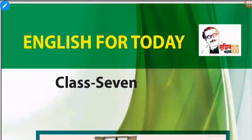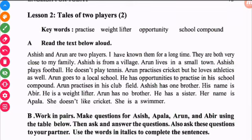Hello learners, this is Abraar Hussain Chajan and welcome to High School English. This class is for the students of Class 7 for their English. Today in this class I will discuss Unit 7, Lesson 2. The title of this lesson is 'Tales of Two Players'.